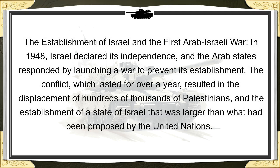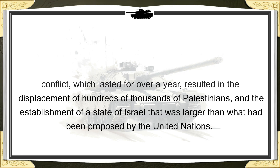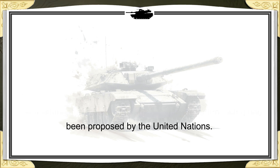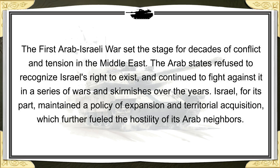The establishment of Israel and the first Arab-Israeli War: in 1948, Israel declared its independence, and the Arab states responded by launching a war to prevent its establishment. The conflict, which lasted for over a year, resulted in the displacement of hundreds of thousands of Palestinians and the establishment of a State of Israel that was larger than what had been proposed by the United Nations. The first Arab-Israeli War set the stage for decades of conflict and tension in the Middle East. The Arab states refused to recognize Israel's right to exist and continued to fight against it in a series of wars and skirmishes over the years.